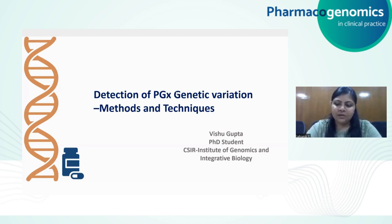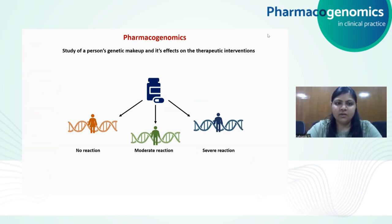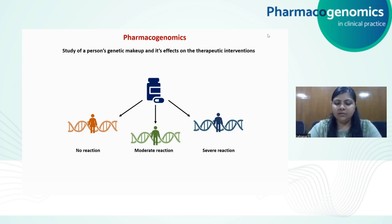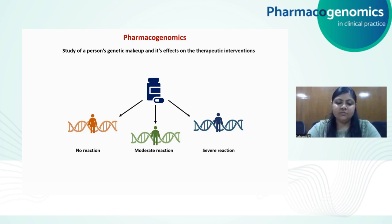Just to briefly revise: pharmacogenomics is the study of a person's genetic makeup and its effect on the therapeutic interventions given to that individual or to a specific population. There could be a scenario in which an individual receiving a drug could show no toxicity or very good efficacy to certain drugs. However, another individual given the same drug could show reverse effects, and there could be an individual showing a moderate reaction. It is very important to study the genetic basis leading to these differences in reactions to a specific drug.